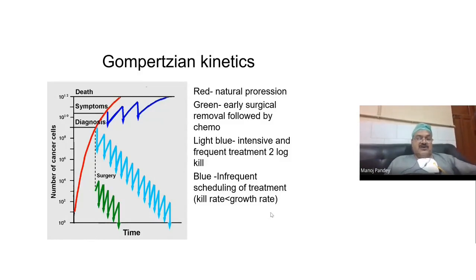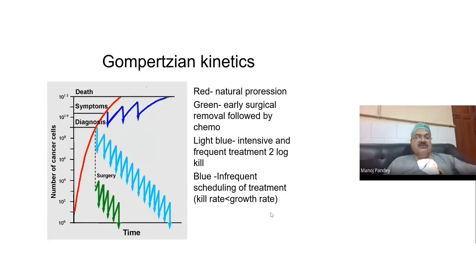The red line in this graph represents natural progression — if you do not intervene with surgery, radiotherapy, or chemotherapy, cells keep growing until the patient dies. Earlier you intervene, at the time when the growth rate is higher, the better the survival, because as the growth rate is higher, the cell kill will be higher. This is represented by the green line for early intervention, and the blue line for late intervention where tumor burden never reaches zero.